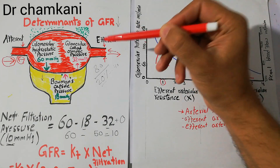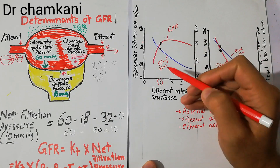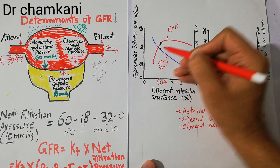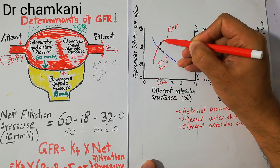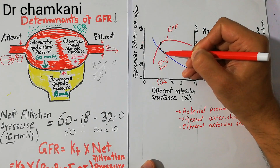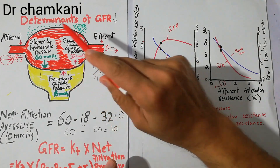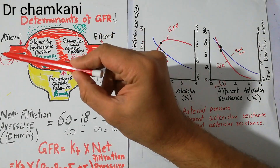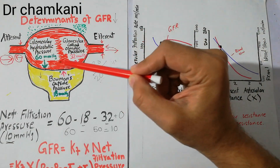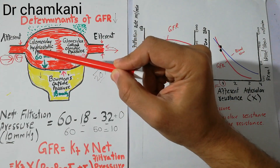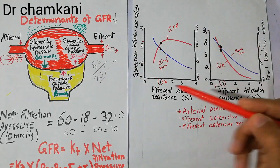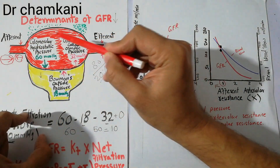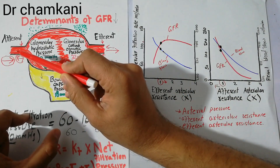Although the blood flow has started decreasing, when efferent arteriolar resistance slightly increases, blood coming into the glomerular capillaries cannot move out. So the pressure in the glomerular capillaries increases, the glomerular hydrostatic pressure increases, and the GFR starts increasing. However, from the efferent end, the blood flow has started decreasing because blood is being accumulated and pressurized in the capillaries.